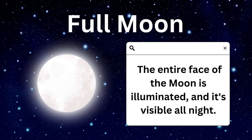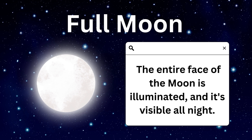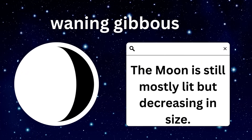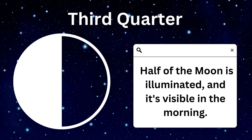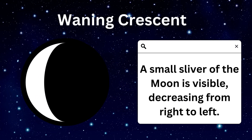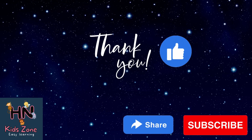Full moon: The entire face of the moon is illuminated and it's visible all night. Waning gibbous: The moon is still mostly lit but decreasing in size. Third quarter: Half of the moon is illuminated and it's visible in the morning. Waning crescent: A small sliver of the moon is visible, decreasing from right to left.